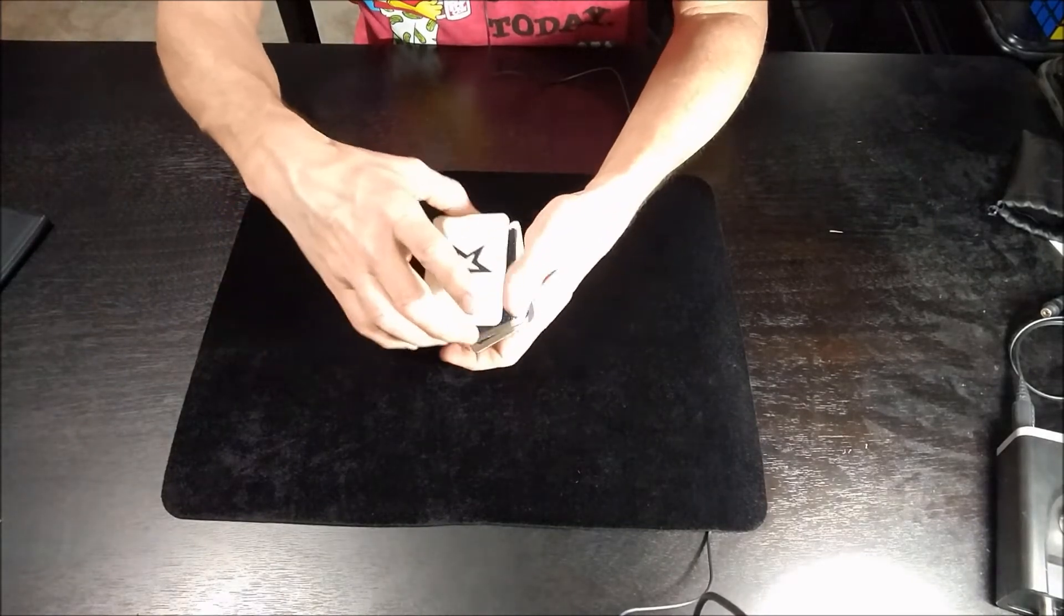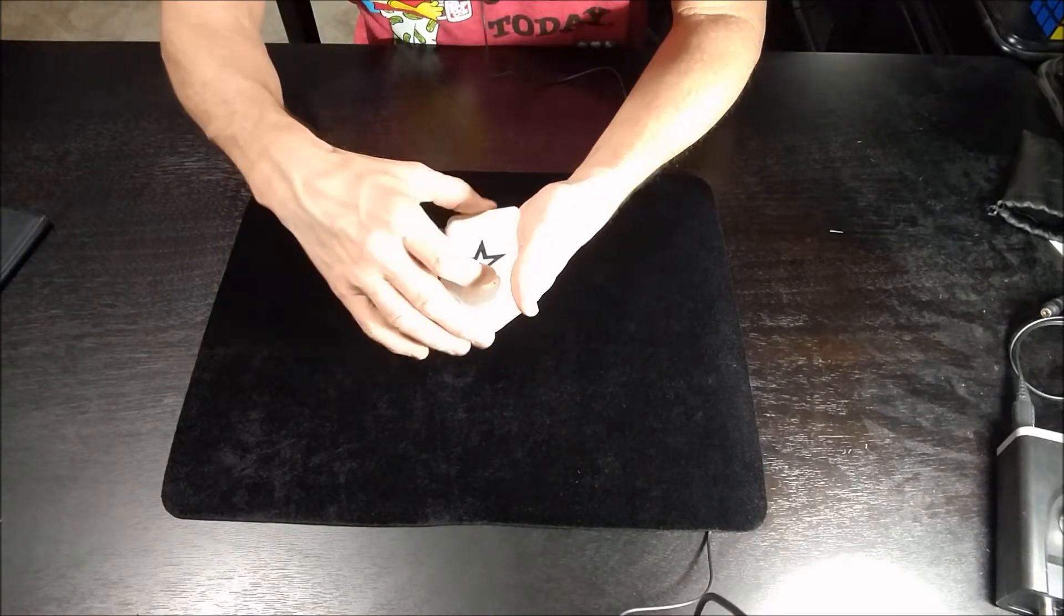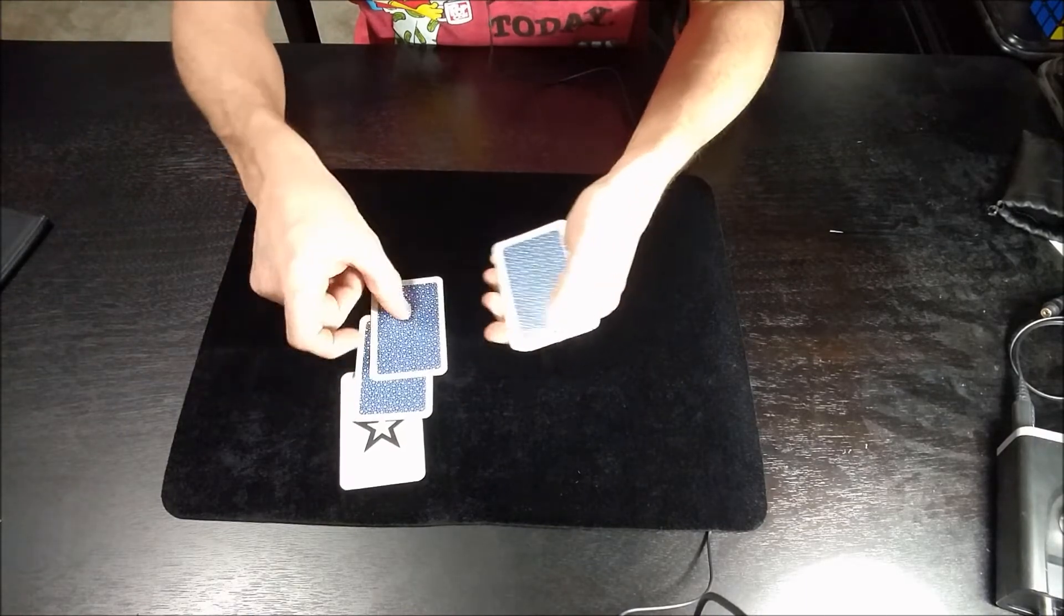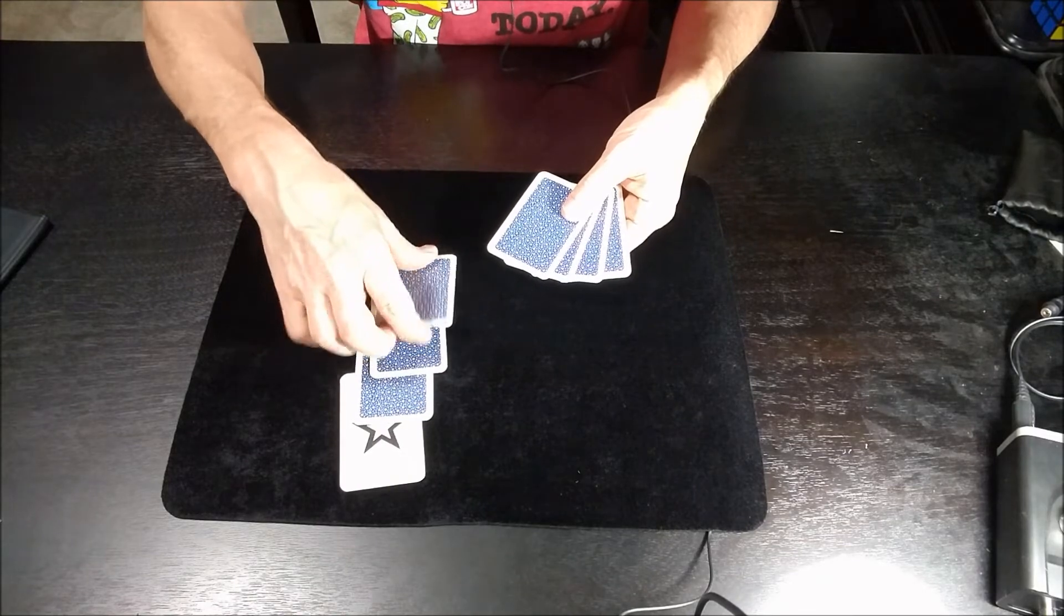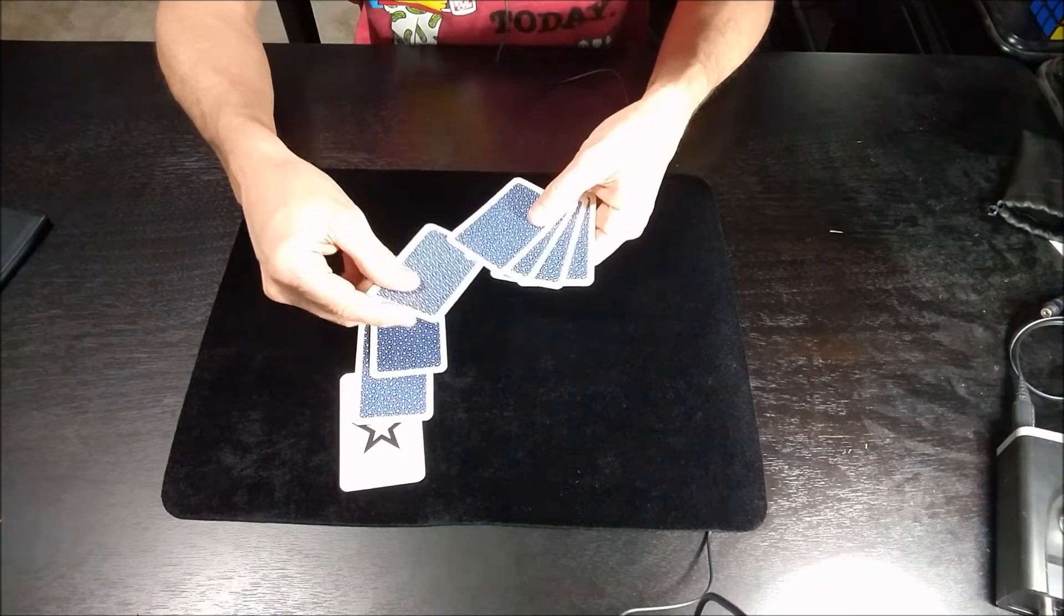We have the four stars on top. One, two, three, four stars. We're going to leave them right here. One, two, three, four. We're only going to use one star at a time. We're going to take the first star and place it in the middle.